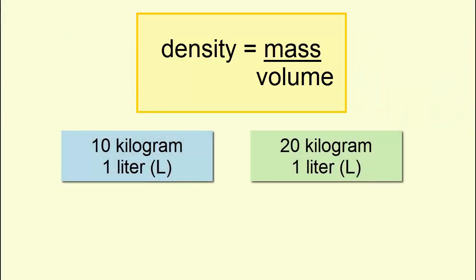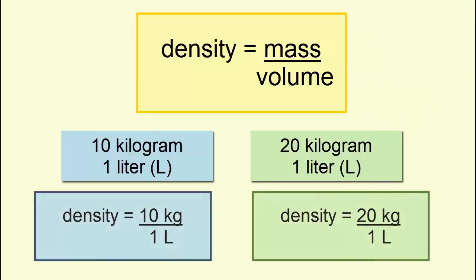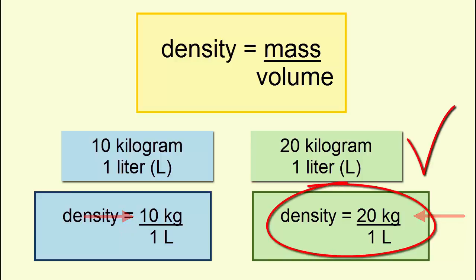Imagine two objects of the same volume but with different masses, same denominator, different numerators. Which object is denser? The object with the greater mass, numerator, is the denser one.